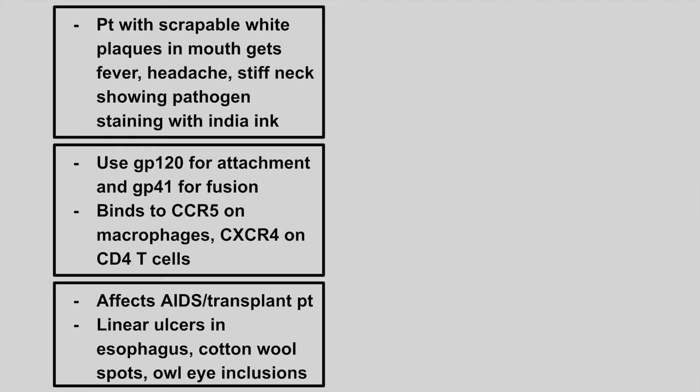The next patient has scrapable white plaques in the mouth, and then gets a fever, headache, stiff neck, and shows a pathogen that stains with India ink. This is an HIV infection. HIV patients tend to get candida infections with oral thrush demonstrated by the scrapable white plaques, and then meningitis-like symptoms with Cryptococcus neoformans, hence the India ink staining pathogen.